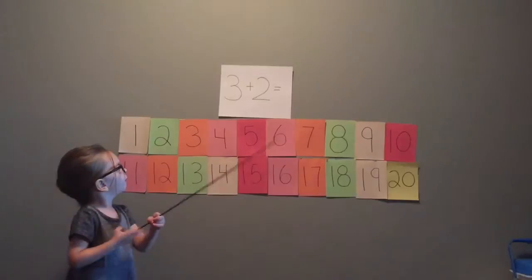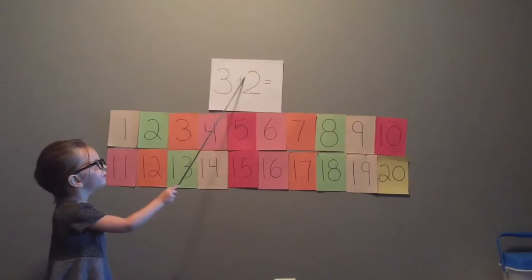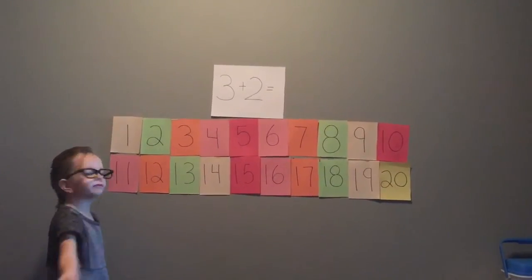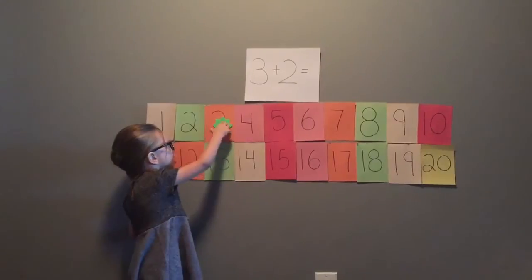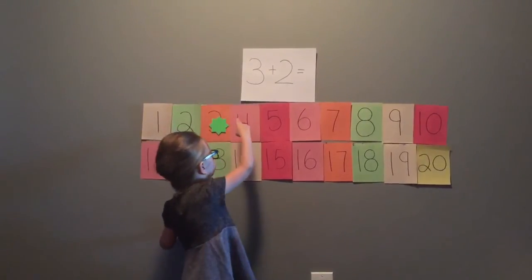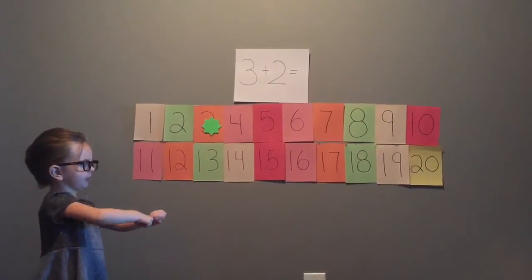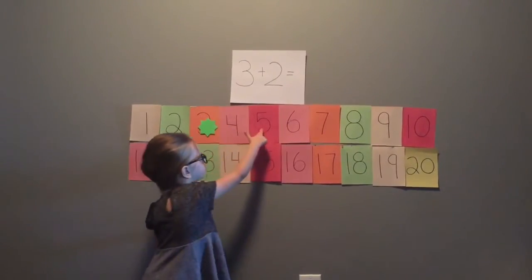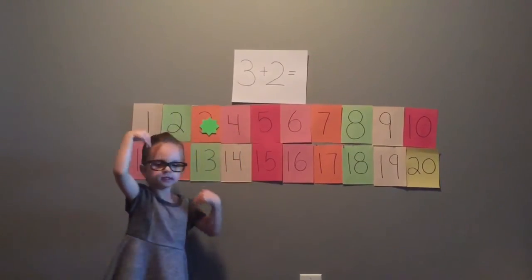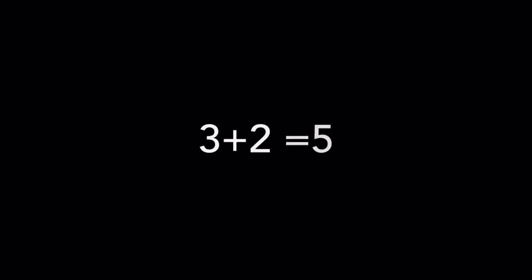Next problem is 3 plus 2. Stick around 3 and count 2 spaces: 1, 2 — so that makes 5. 3 plus 2 equals 5.